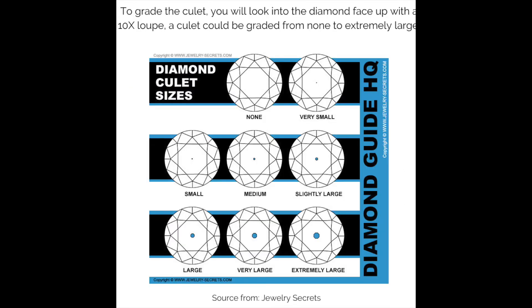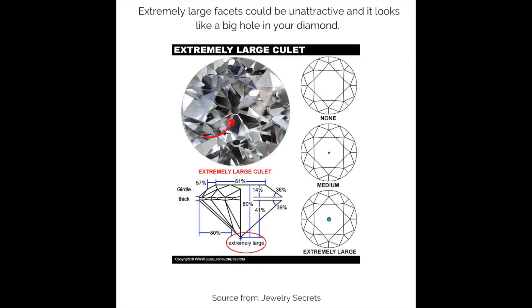To grade the culet, you will look into the diamond face up with a 10x loupe. A culet could be graded from none to extremely large. Extremely large facets could be unattractive — it looks like a big hole in your diamond.